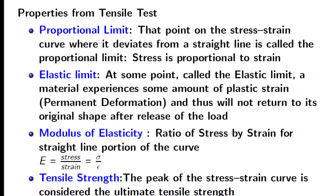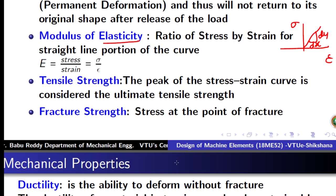We define one more important property: the modulus of elasticity, defined as the ratio of stress to strain. Since stress (sigma) is on the y-axis and strain (epsilon) is on the x-axis, if you measure the slope of the linear portion — dy by dx — that value is called Young's modulus. This defines the stiffness of the material.